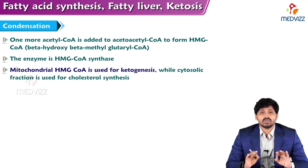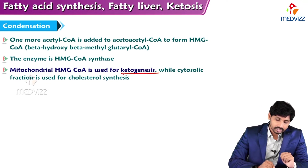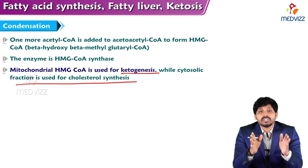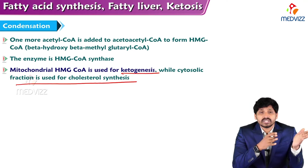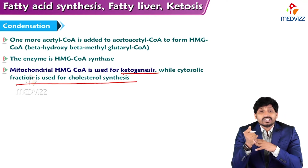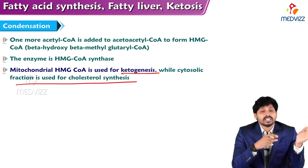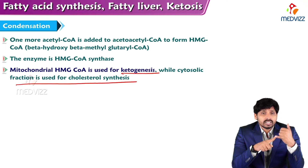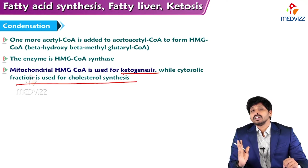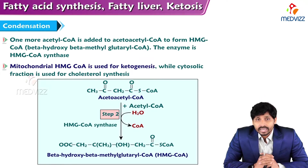These two steps are common for both cholesterol and ketone body synthesis. The enzyme is HMG CoA synthase, which is a rate-limiting enzyme. Importantly, mitochondrial HMG CoA is used for ketogenesis, while cytosolic HMG CoA is used for cholesterol synthesis. There are two isoforms of this enzyme — one present in mitochondria and one in the cytoplasm.